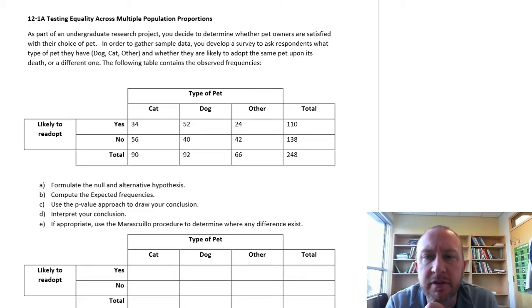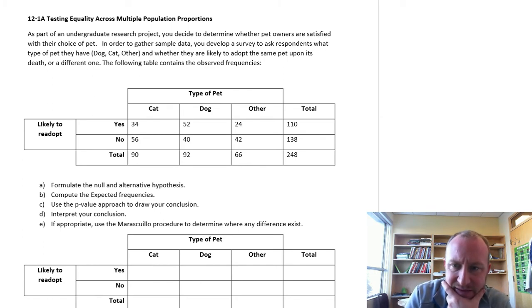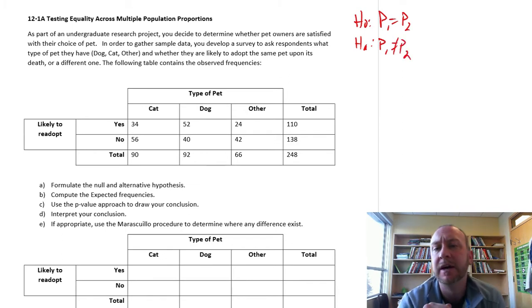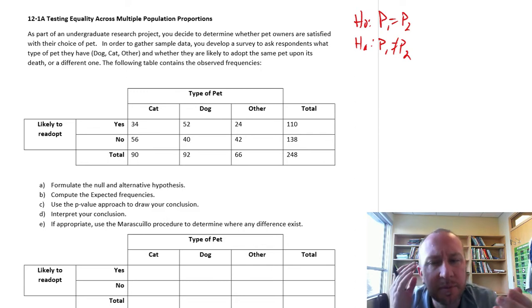Hello and welcome to this first problem in module 12 looking at testing for the equality across multiple population proportions. We've done something similar to this. In module 10 we looked at a situation where we wanted to test the equality across two population proportions. And this was perhaps at this point a relatively straightforward two-sample z test, so the calculations were a little bit more straightforward than what we're going to be getting into here.